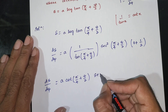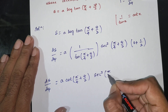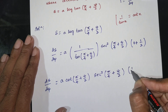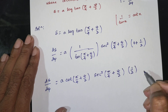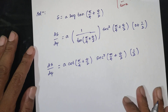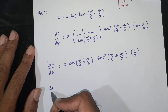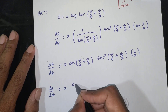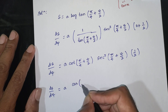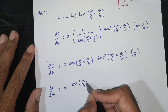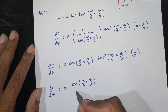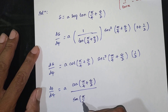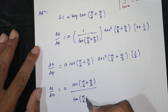We have a·sec²(π/4 + ψ/2)·(1/2), and then we simplify by writing cos over sin, giving a·cos(π/4 + ψ/2) divided by sin(π/4 + ψ/2).